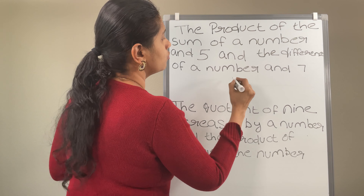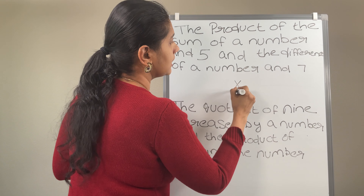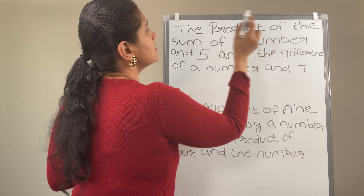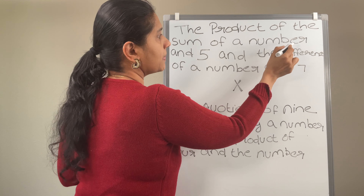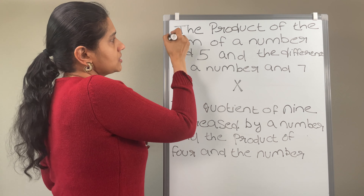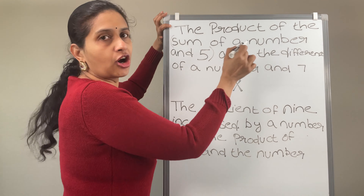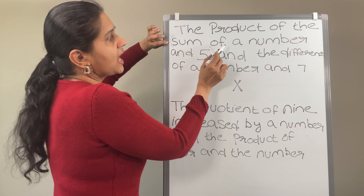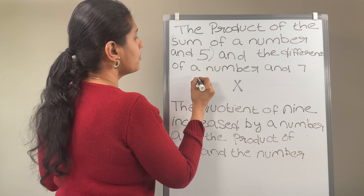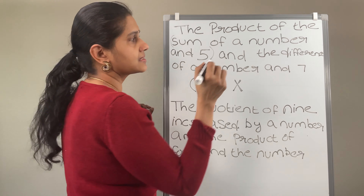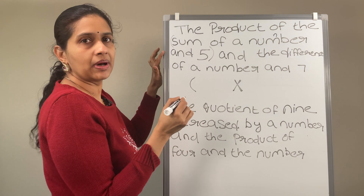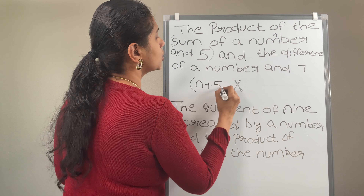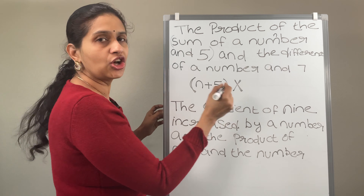The product of the sum of a number and 5. Product means multiply. I am putting the multiplication of the sum of a number and 5. Consider n as the variable. So the sum of a number and 5 means n plus 5. So that will come on one side of the product.